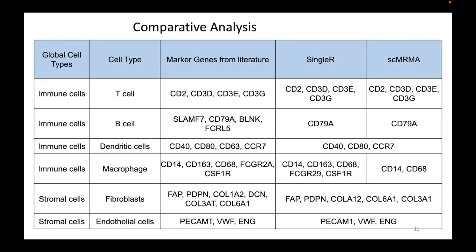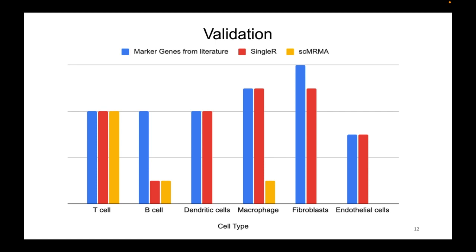To further validate the results obtained from the semi-automated and automated tools, we defined all marker genes available from the scientific literature as baselines and compared the overlap between findings from the annotation tools and those available in existing and previous studies. We restricted our study to immune cells and their subtypes — T cells, B cells, dendritic cells, macrophages, fibroblasts, and endothelial cells — and the results from annotation tools were compared against these baselines.